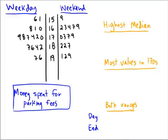Let's do the ranges first, starting with the weekend. To find the range, we need the maximum value minus the minimum value. Looking at the weekend side, the highest value is in the 190s with a leaf of 9, so the maximum is 199. The minimum is in the 150s with a leaf of 9, representing 159. Therefore the range for the weekend is 40.